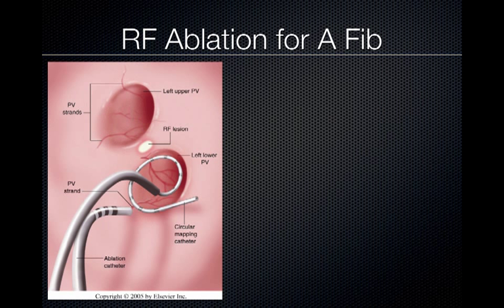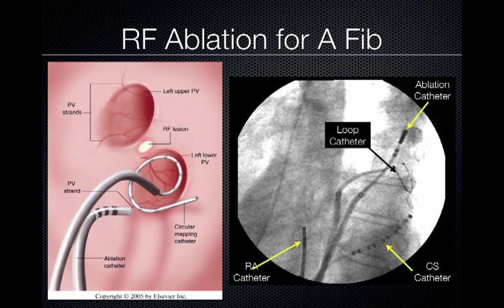Initially, ablations were performed at spot locations. However, it was discovered that when this occurred, another location would develop driving electrical activity that caused the AFib. So now, in general, ablation completely isolates the pulmonary vein ostia from the body of the left atrium using a circumferential ablation technique.